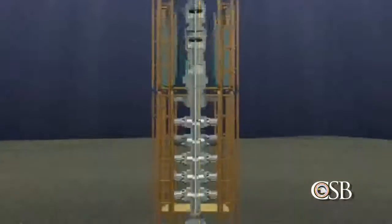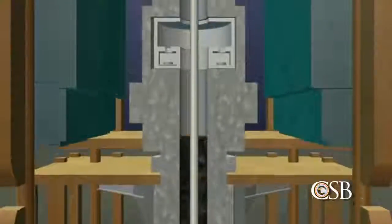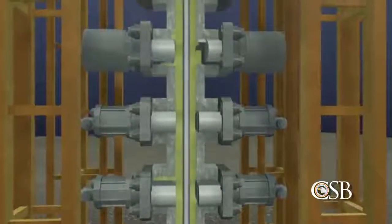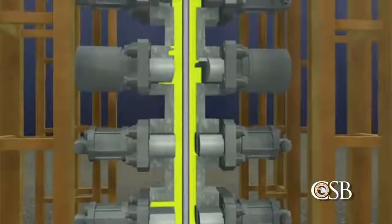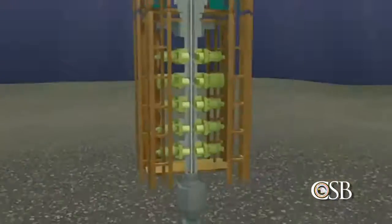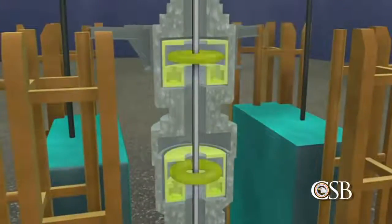If a kick occurs, the blowout preventer is designed to prevent flammable oil and gas from traveling up the riser to the drilling rig. This is done by sealing the area around the drill pipe, known as the annular space. To do this, the crew can manually close pipe rams and donut-shaped rubber devices known as annular preventers.